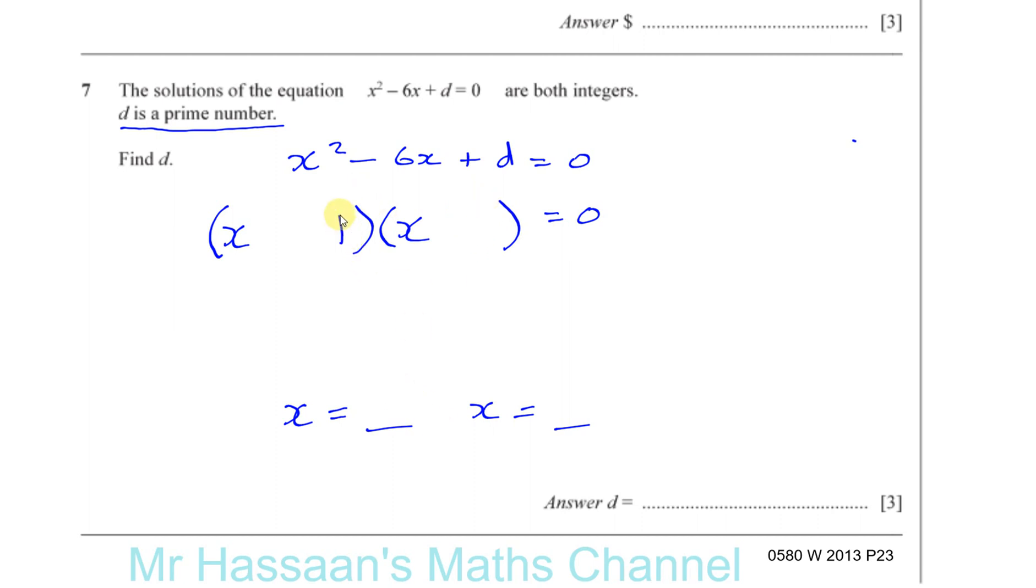Because if d is a prime number, then remember d is the product, so this number here is the product of these two numbers, and this number here is the sum of these two numbers. If these two numbers multiply to give you d, then one of them has to be 1, because d is a prime number. By definition, the only number that you can multiply anything with to give you a prime number is 1.